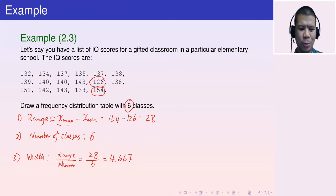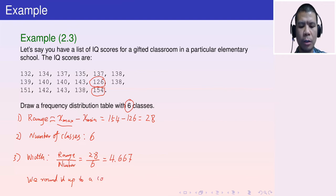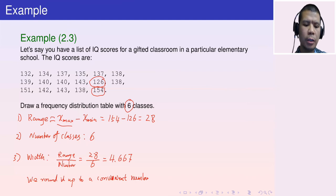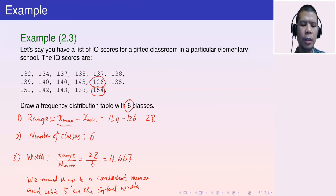We round it up to a convenient number. For 4.667, I would choose 5 as the interval width — it's a multiple of 5 and close to the ratio.